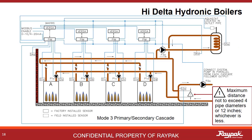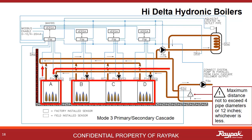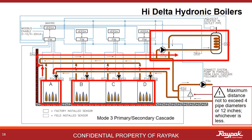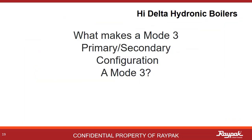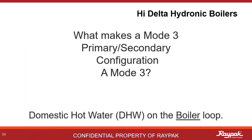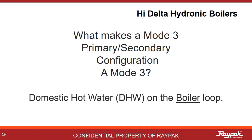Mode 3 can also be run in cascade. Here the A boiler is the master boiler and the others are followers. Being a multiple boiler cascade system, reverse-return plumbing logic applies. It is in Mode 3 because the indirect domestic hot water system is on the boiler loop. So what makes a Mode 3 a Mode 3? It must be plumbed primary-secondary and it must have an indirect domestic hot water system on the boiler loop.